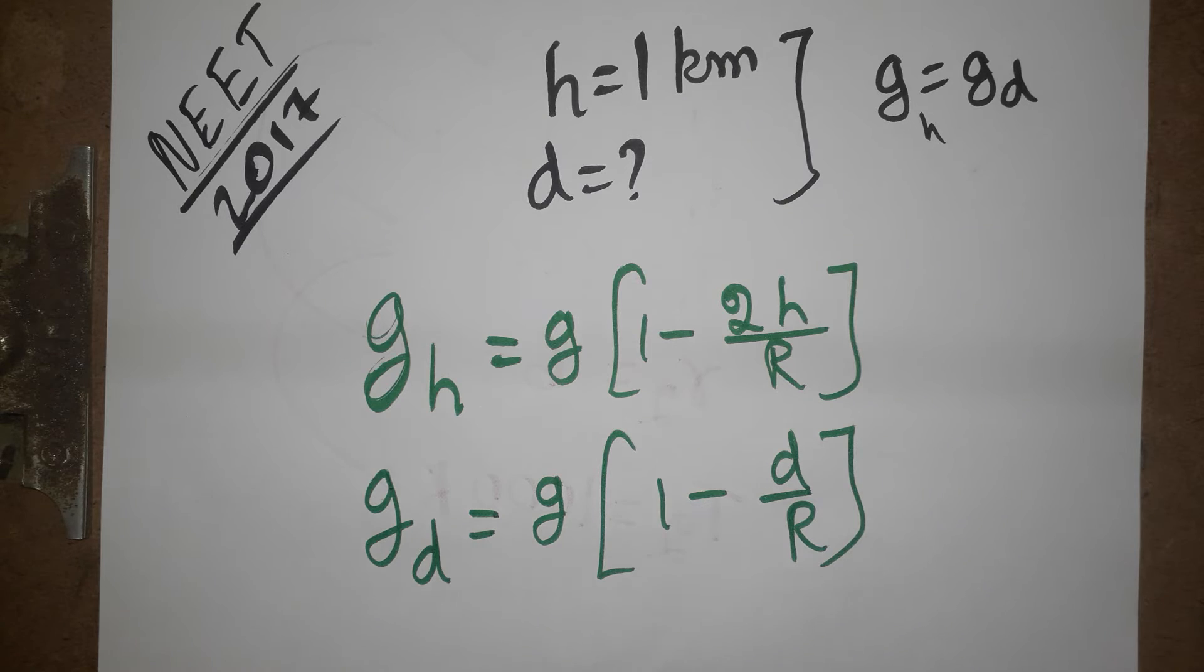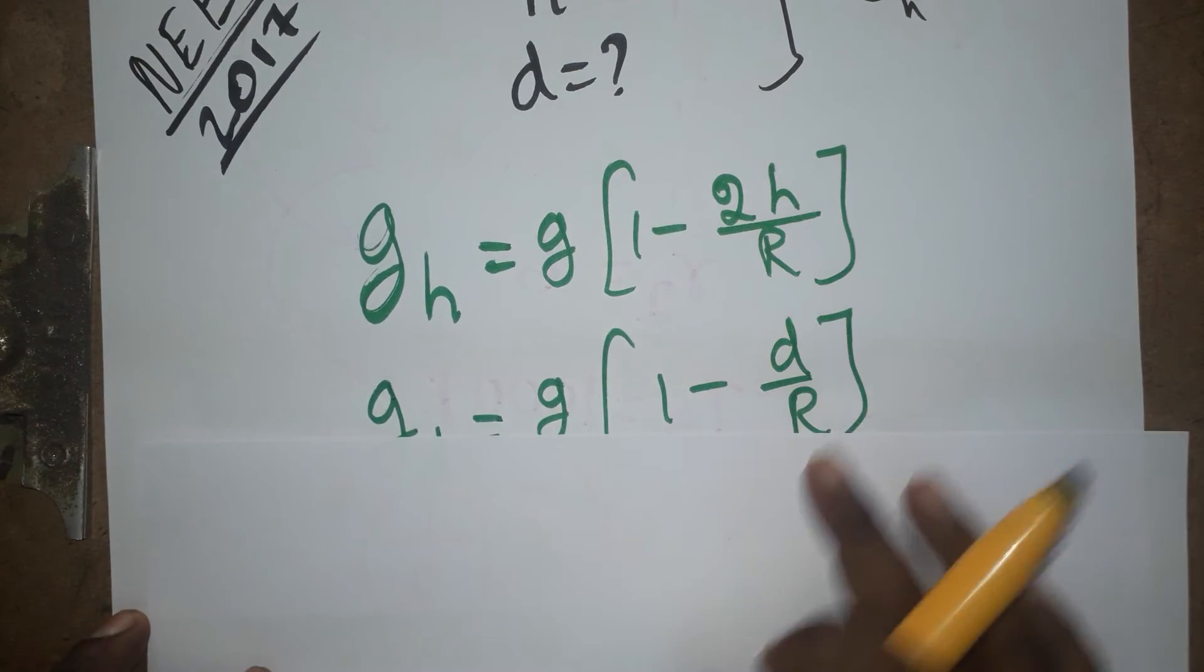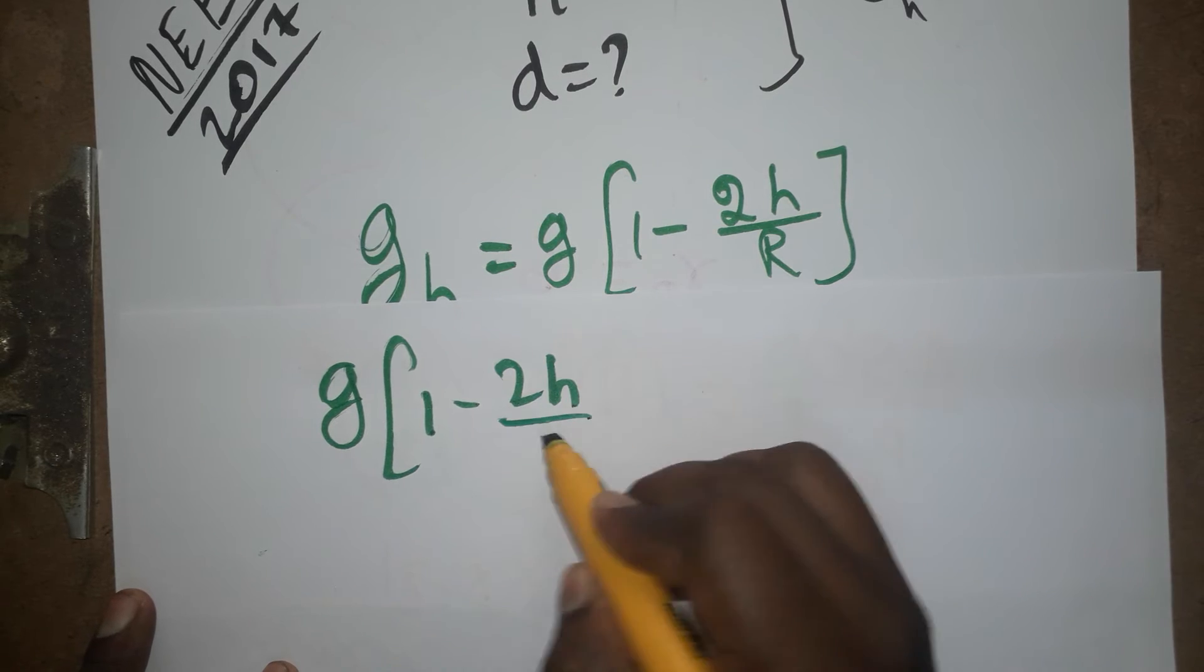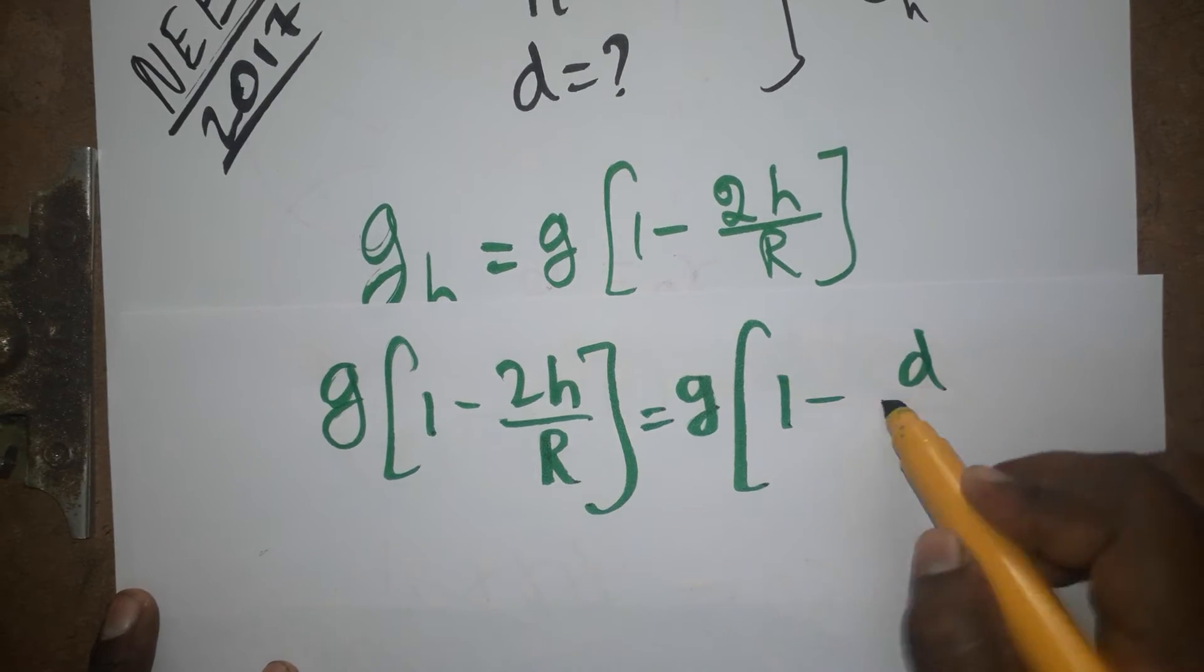According to the question both should be equal. They are asking when depth and height will be equal. So g(1 minus 2H divided by R) equals g(1 minus D divided by R).